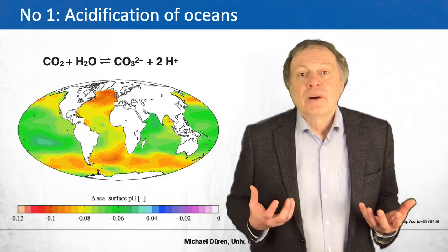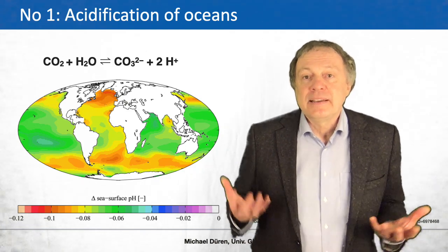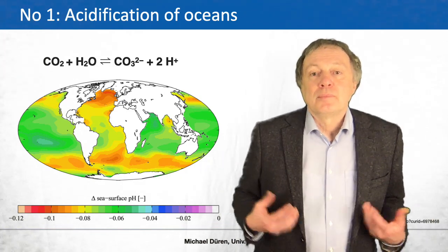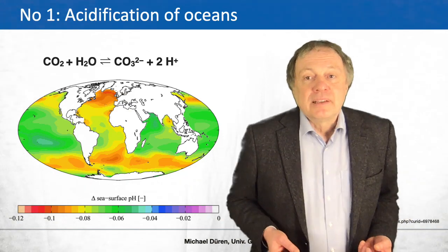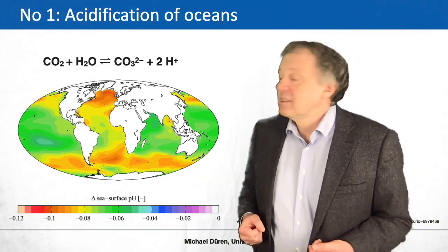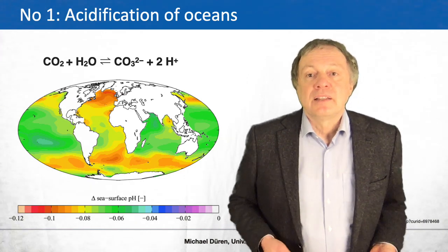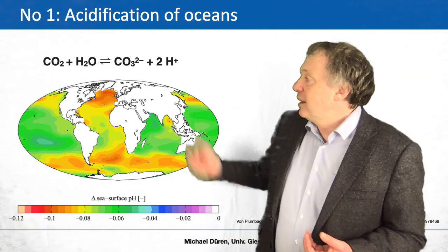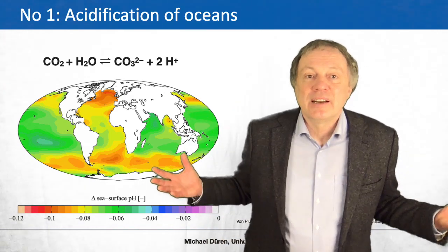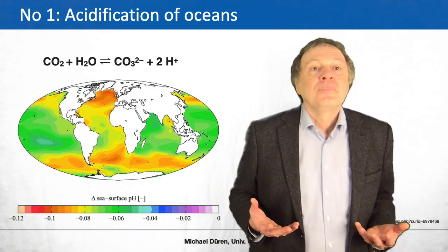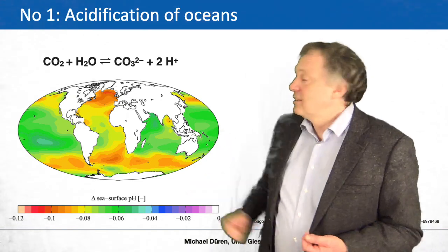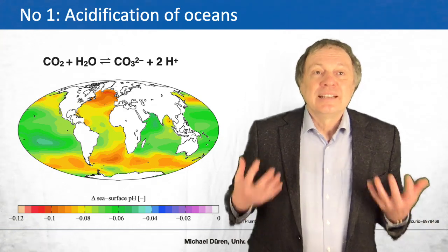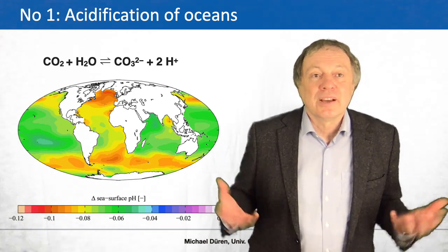What does it mean? Well, normally the ocean is basic. When it becomes less and less basic, it becomes more and more acid. This has been happening for about 200 years. On this map you see the change of the pH value over the last 200 years. If it were white or pink, nothing would have changed — but there is no area in the ocean where that is the case. Instead we have areas with more or less change of the pH value. This shows you something is happening, and you cannot neglect that.